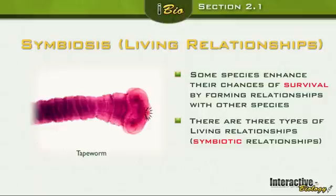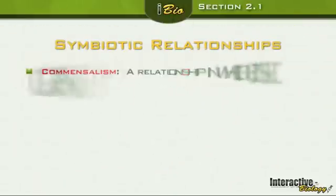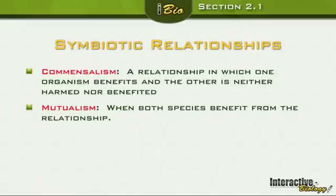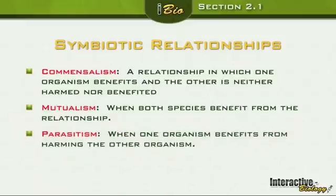Let's look at the three types of living relationships. Number one: commensalism — a relationship in which one organism benefits and the other is neither harmed nor benefited. Next is mutualism, where both species benefit from the relationship. And the last one is parasitism, where one is benefited and the other is harmed. The tapeworm is an obvious example of a parasite.